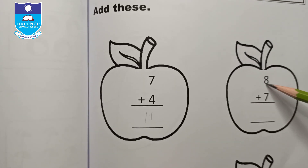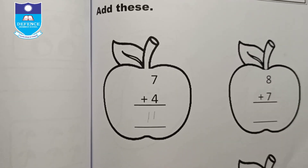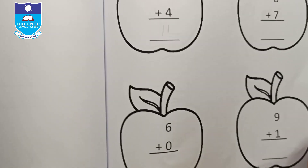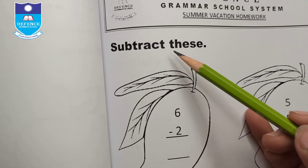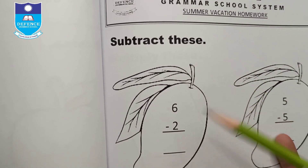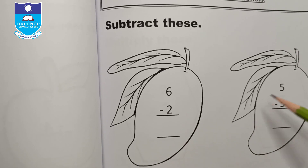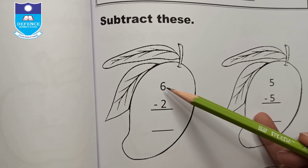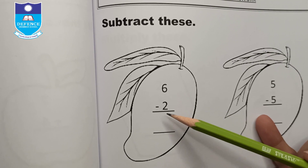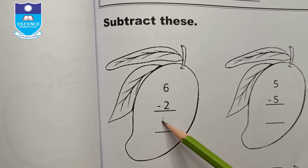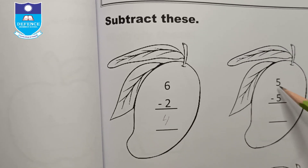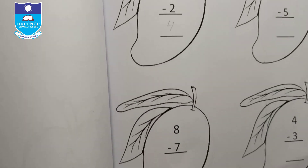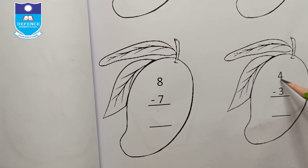Subtract these numbers. For example, 6 minus 2 equals 4 — write 4. Five minus 5 equals 0. Similarly, solve 8 minus 7 and 4 minus 3.